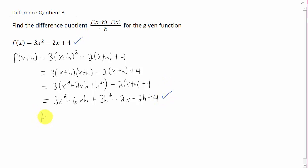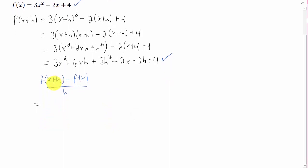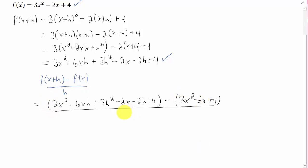Let's plug those two things into our difference quotient formula. If we plug in f of x plus h right here, we get... And if we plug in f of x here, we get... Don't forget your parentheses, and don't forget the minus sign in between the f of x plus h term and the f of x term.